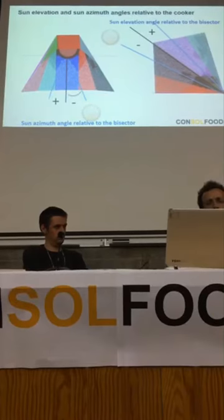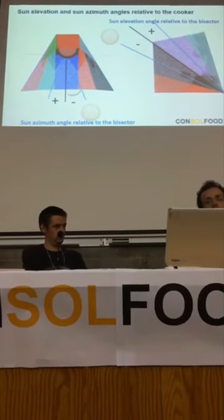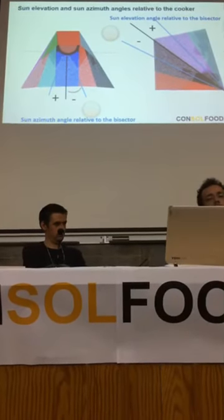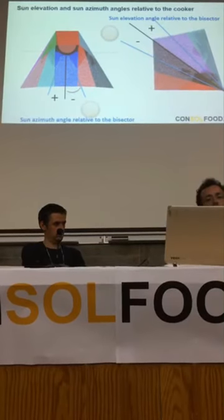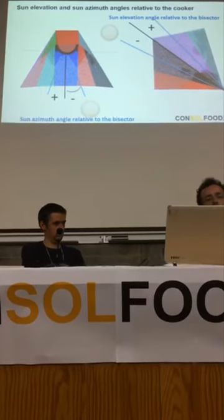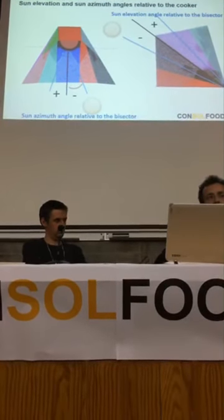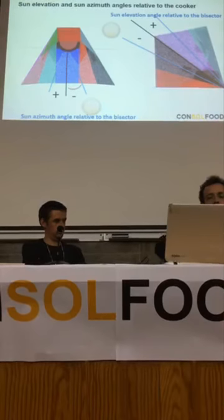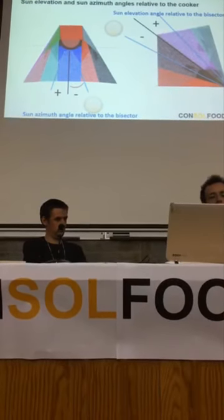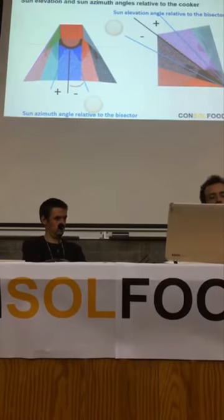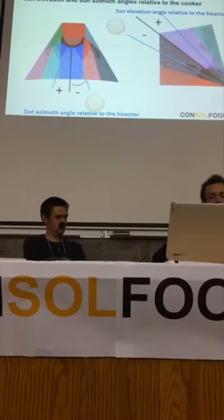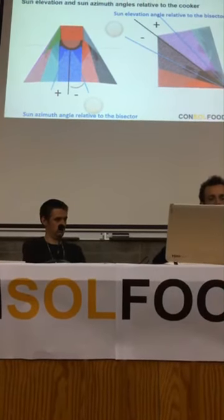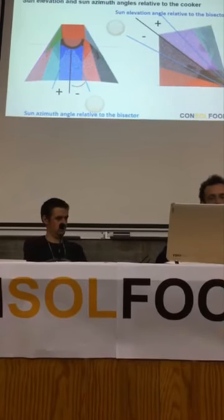It seems that the optimal elevation angle of the sun is 40 degrees, but later we will see if that is true or not. It's negative if the sun is lower and positive if the sun is higher than 40 degrees. Then we made a lot of simulations changing those angles.